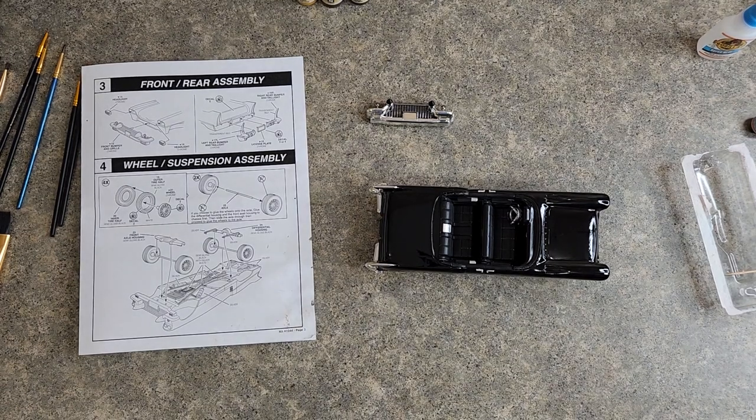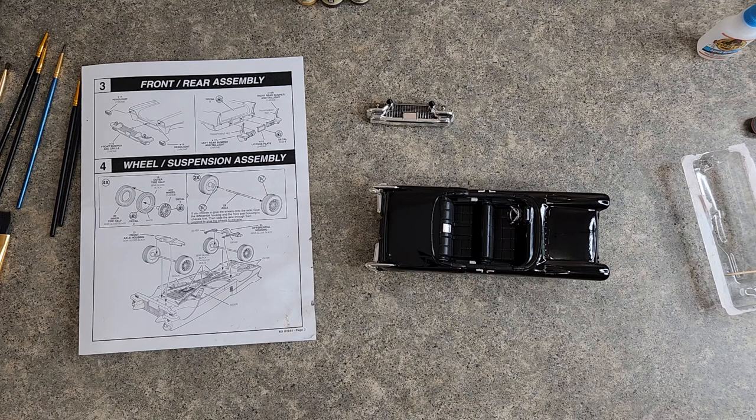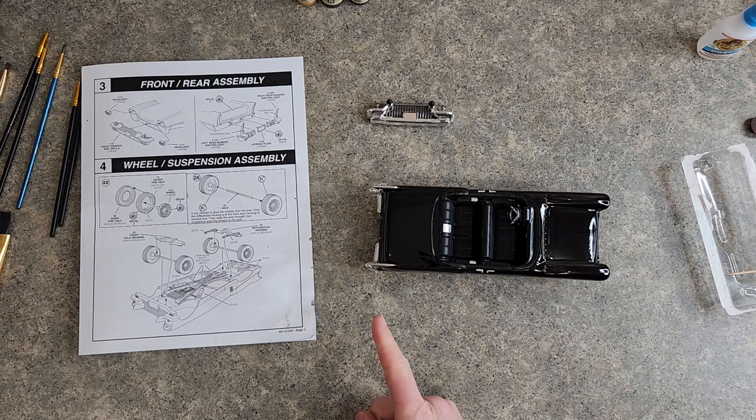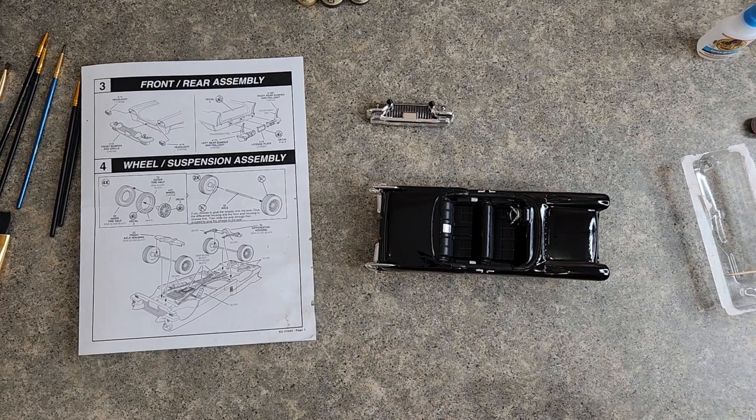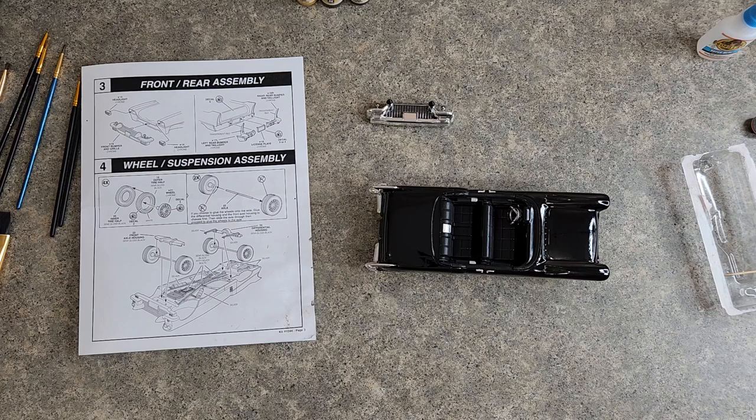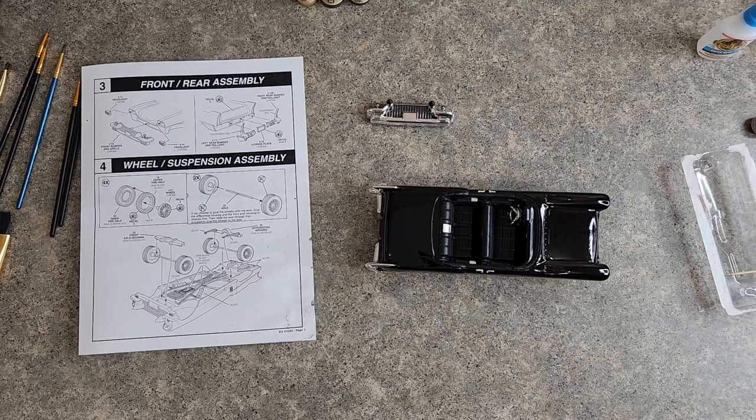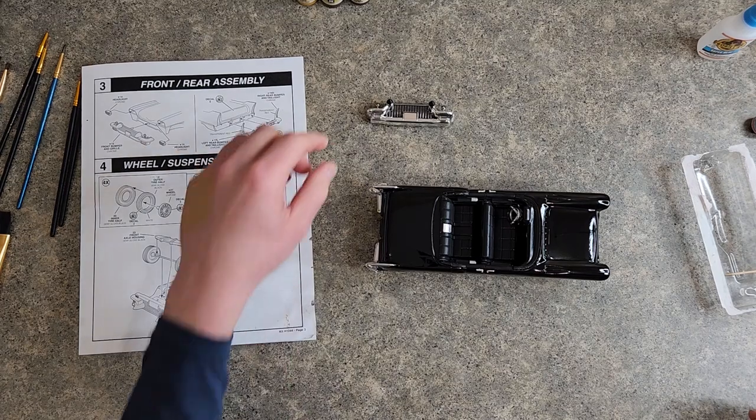Well hello everyone and welcome back to the Atlantis 1957 Cadillac Eldorado Chrome build. Last time we put the rear bumpers on and the headlights onto the front end, and now for the fun part: the front bumper and grille setup.